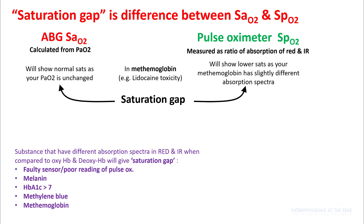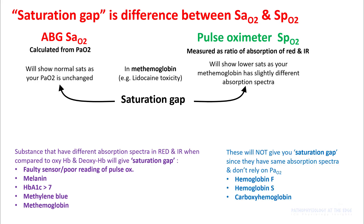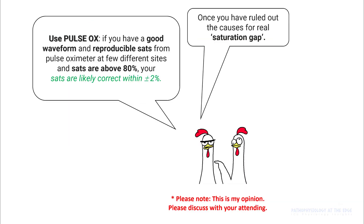You can see a saturation gap in multiple other situations where there is a difference in absorption between the two wavelengths — for example, faulty sensors, poor readings, melanin, A1C, methylene blue, etc. Compounds that have similar absorption spectra compared to hemoglobin will not show any saturation gap. Once you have ruled out the cause for a real saturation gap, go ahead and use pulse ox.